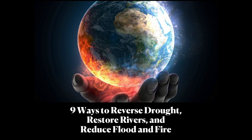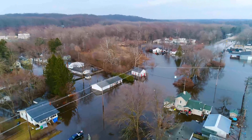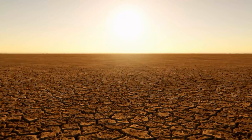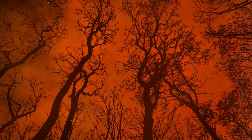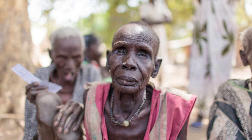Here are nine ways to reverse drought, restore rivers, and reduce flood and fire. Around the world we see communities are in crisis, whether it's from floods destroying infrastructure in cities, drought causing crop failures, or fire incinerating what remains of the landscape. It's causing huge quality of life issues — people are losing their homes, their landscapes, their livelihood, their crops, and it's leading to starvation crises.